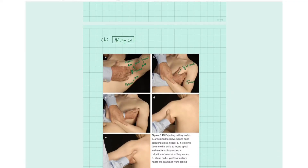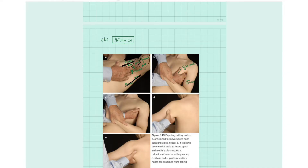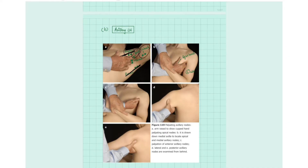The axillary group of lymph nodes includes the anterior group within the anterior axillary fold, the posterior group in the posterior axillary fold, the central group in the central part of the axilla, and if you go deep within the central part you can palpate the apical group. The lateral group of lymph nodes lies along the humerus.